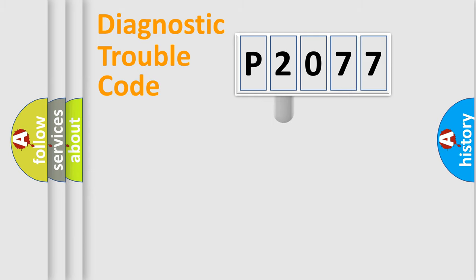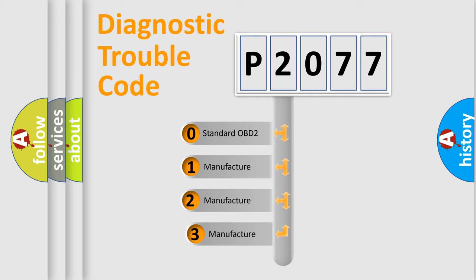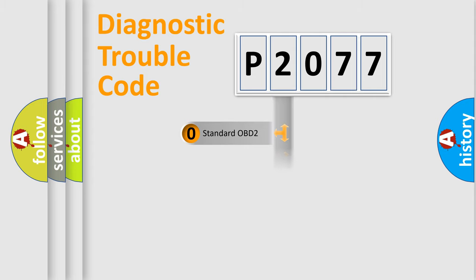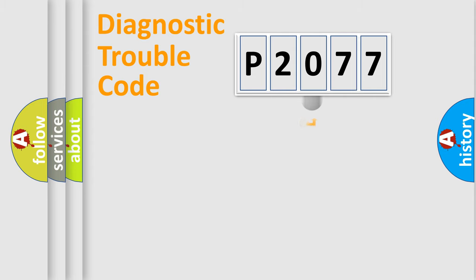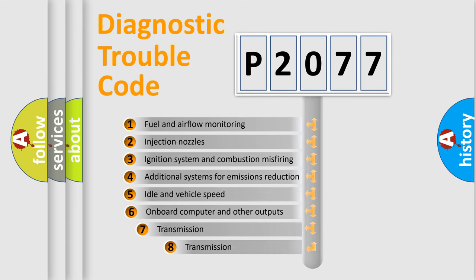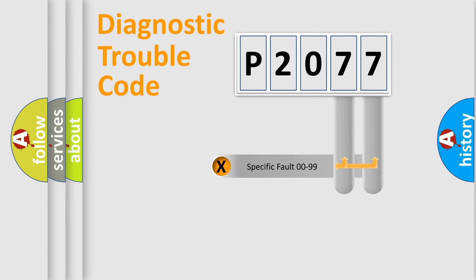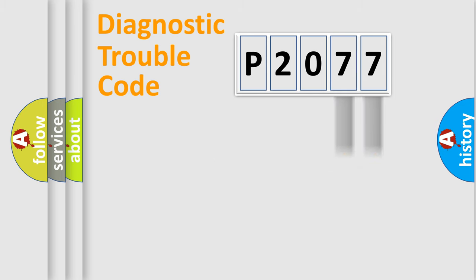This distribution is defined in the first character of the code. If the second character is expressed as zero, it is a standardized error. In the case of numbers 1, 2, or 3, it is a more specific expression of a car-specific error. The third character specifies a subset of errors. The distribution shown is valid only for the standardized DTC code. Only the last two characters define the specific fault of the group.